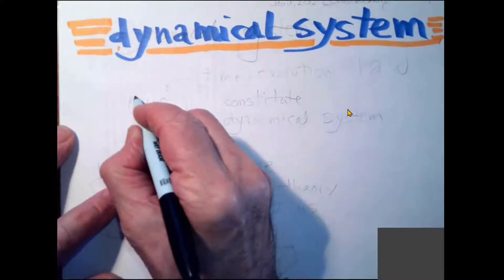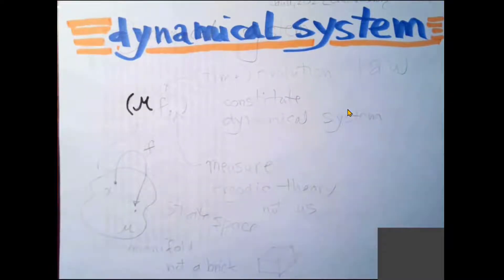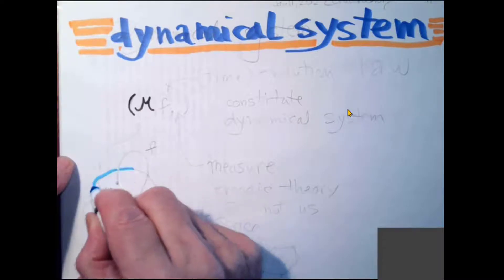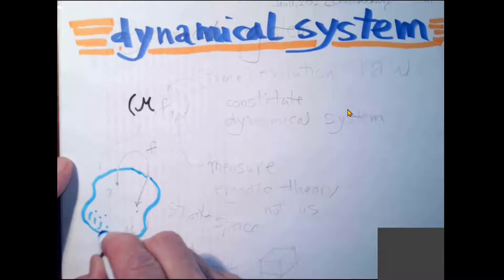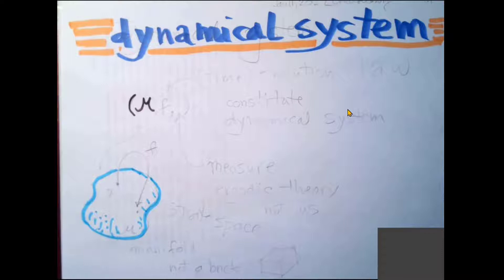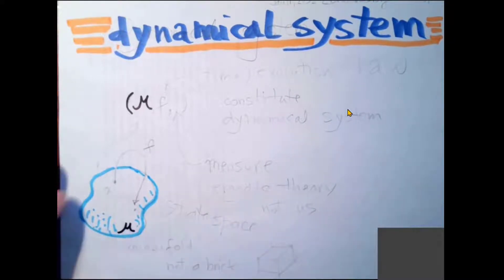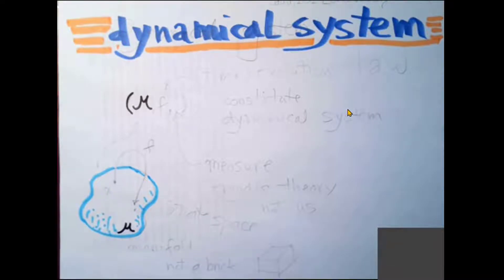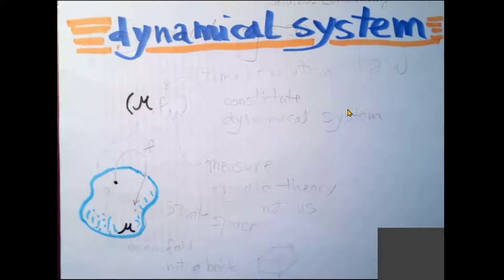The two things I will define in this course: one is a curly M, and that curly M denotes some manifold, which is all possible states of the system you are interested in. Its dimensionality is sufficient that if you specify a set of numbers, you know where you are uniquely in state space. So if it's a double pendulum, it's a couple of angles and velocities.